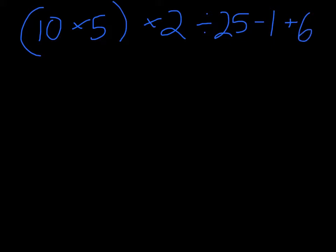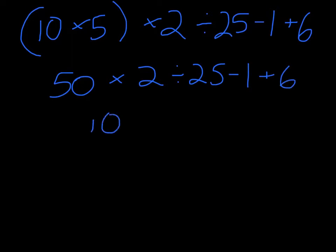First, you solve anything that's in the parentheses. So 10 times 5 equals 50 times 2 divided by 25 minus 1 plus 6. 50 times 2 is 100 divided by 25 minus 1 plus 6. 100 divided by 25 is 4 minus 1 plus 6.